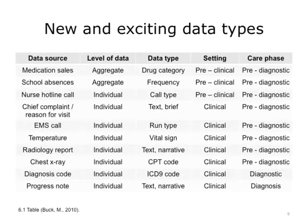Syndromic surveillance has expanded to encompass a variety of new data types. Medication sales — for example, the number of cold medicines sold daily — are used as an indicator for the presence of influenza-like illness in a community. This data is aggregate, meaning each row gives a count of sales of a particular type of medication. School absences are another example of aggregate, preclinical, pre-diagnostic syndromic surveillance data.